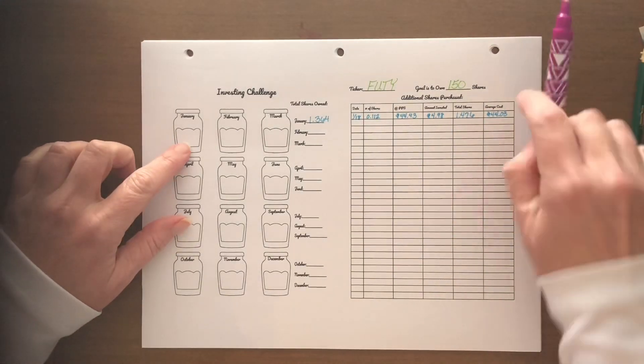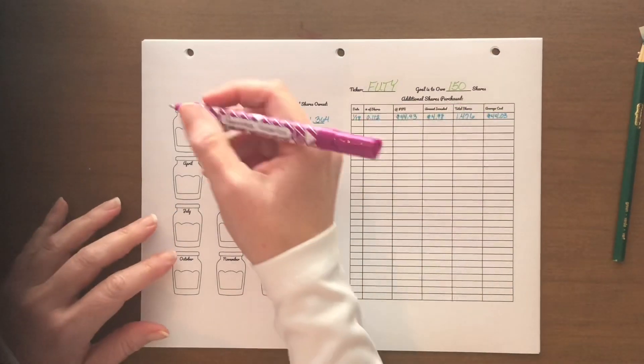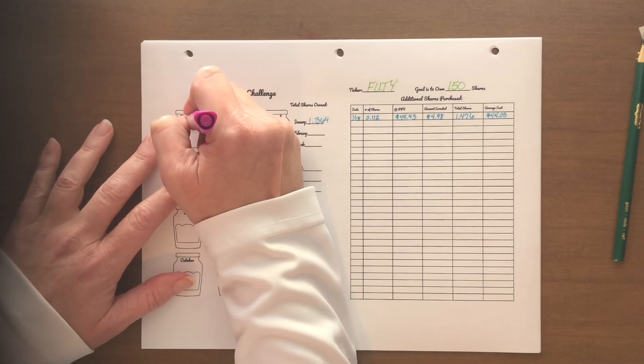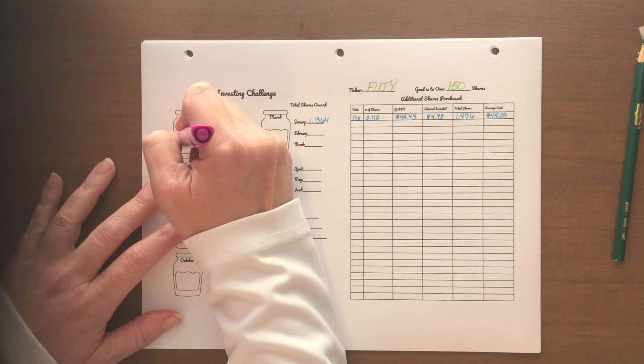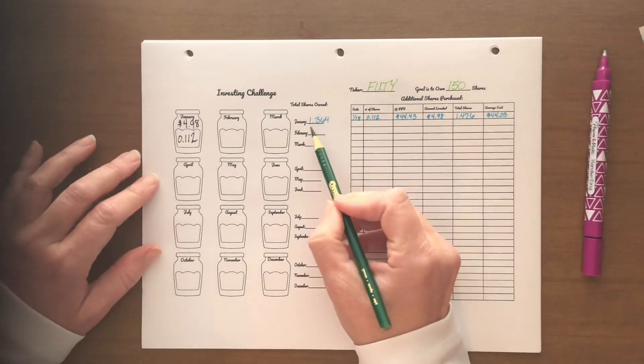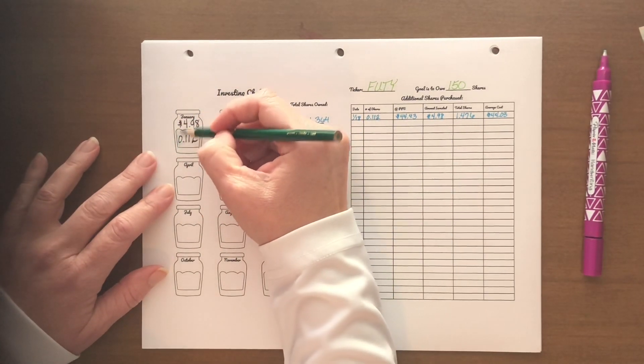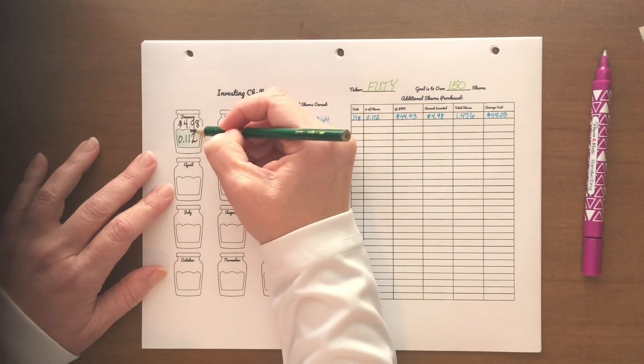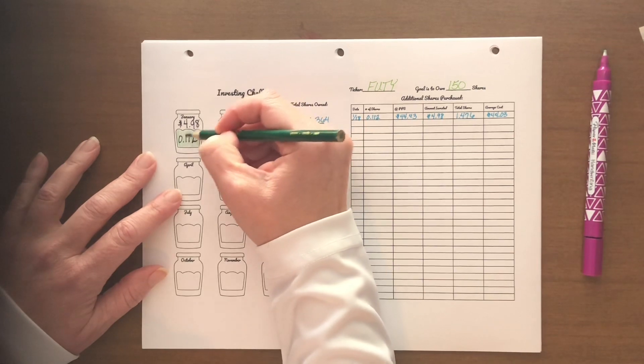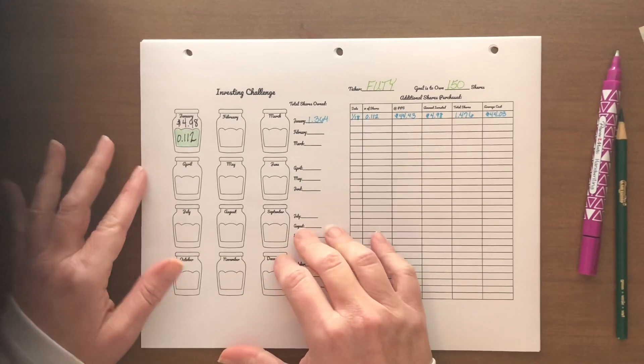Next is FUTY. Both of these are Fidelity stocks. And this one was not $5, it was $4.98, and it was able to purchase 0.112 shares. So I started the month with 1.364 shares, I add this 0.112 shares to it, and now I'm sitting just under 1.5 shares. Yay! Moving in the right direction.